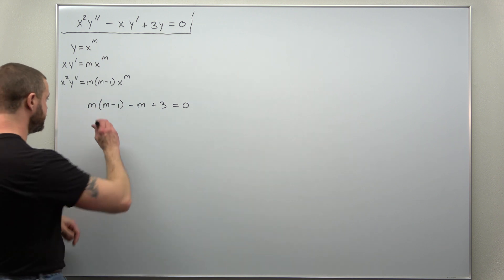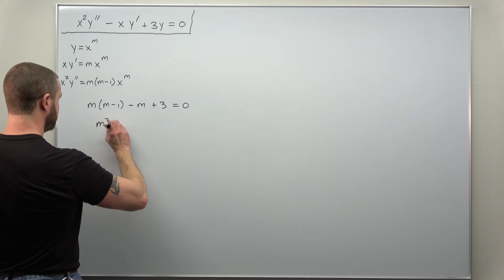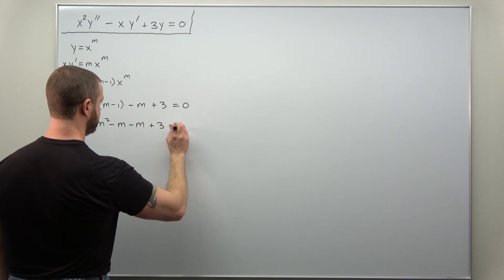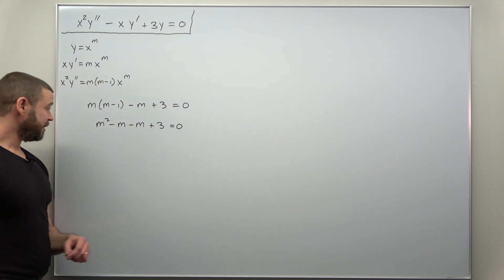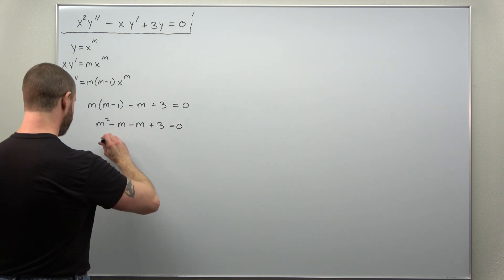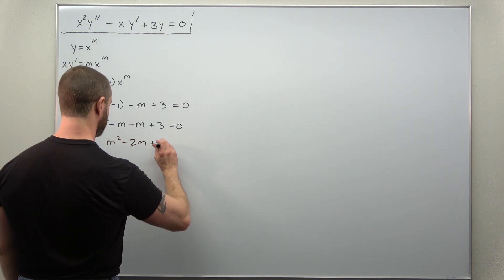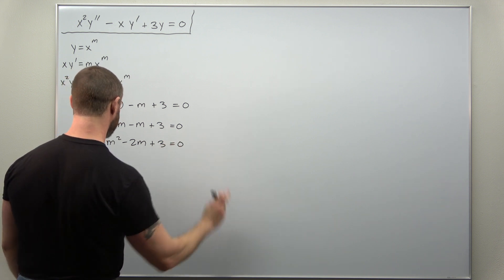Alright, we know what to do from here. Distribute. And it looks like we can combine like terms to get m squared minus 2m plus 3 equals 0.